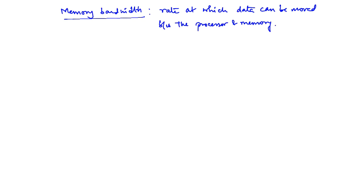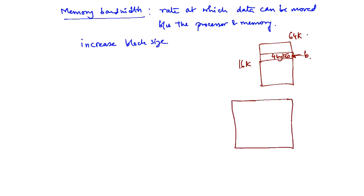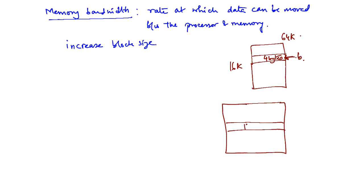So let us look at some aspects of memory bandwidth. How do you increase the memory bandwidth? One simple way is to increase the block size. Earlier we were talking about a cache storing 4 bytes — a 64K cache was actually 16K entries each of 4 bytes. That was the word size being returned by the memory. Now, what if instead of 4 bytes, I start maintaining 16-byte cache entries? This is called the cache line size.